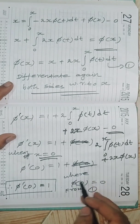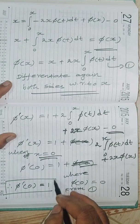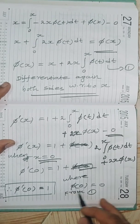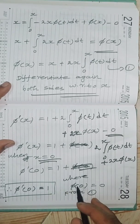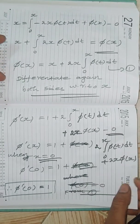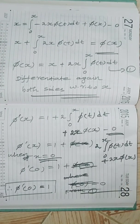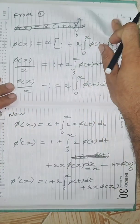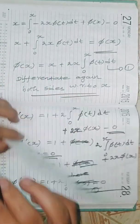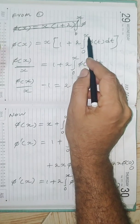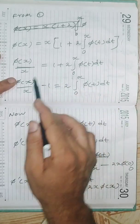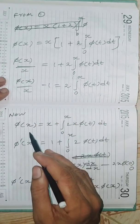So π'(0) = 1. This is a very important initial condition. From equation (1), π(x) = x + 2x·∫₀ˣ π(t) dt, and from differentiating again, we have π'(x) = 1 + 2·∫₀ˣ π(t) dt + 2x·π(x). Now we use this to eliminate the integral.